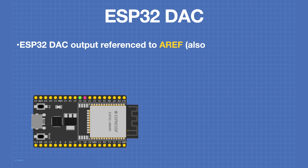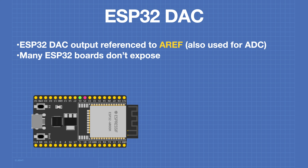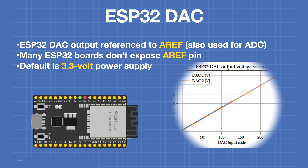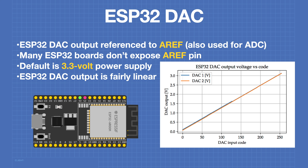The output of the ESP32 DAC is referenced to the AREF, or Analog Reference, pin — the same pin used to reference the analog-to-digital converters. Many ESP32 boards don't expose the AREF pin, so the default reference voltage is the 3.3V power supply. The DAC output is fairly linear, however it does not reach 0V when the input is 0, and it does not achieve the AREF voltage when the input is 255. This is a known limitation of the DACs in the ESP32.